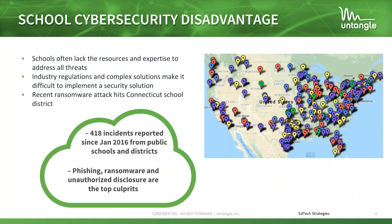The school cybersecurity disadvantage is obvious. Schools lack resources and expertise to address all these emerging threats, and complex security solutions make it difficult to implement something that can actually address all these issues. Some recent ransomware attacks hit a Connecticut school district. About 418 incidents reported in the last couple of years are from public schools and districts — phishing, ransomware, and unauthorized disclosure are the top culprits. A district up in Boulder, Colorado got phished for close to one million dollars over a series of a few months. User education is a really valuable resource and should always be part of your multi-layered approach to antivirus and malware prevention.